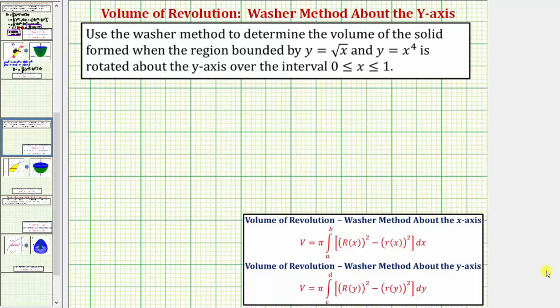We want to use the washer method to determine the volume of the solid formed when the region bounded by y equals the square root of x and y equals x to the fourth is rotated about the y-axis over the closed interval from zero to one for x.